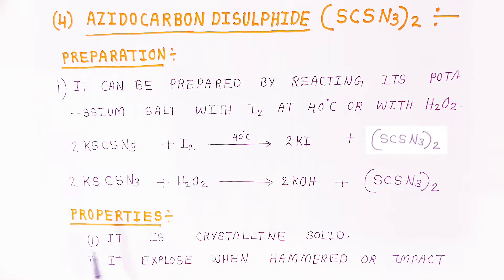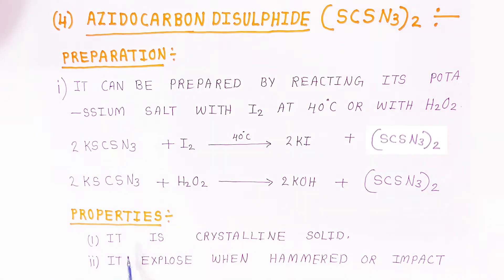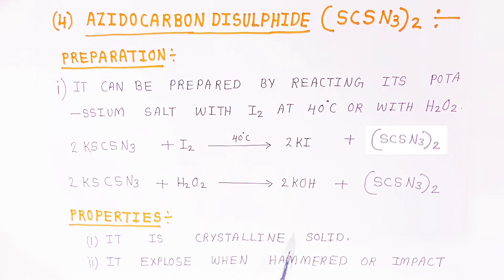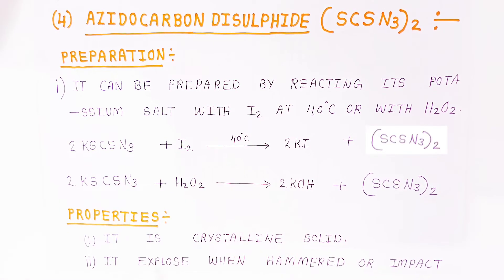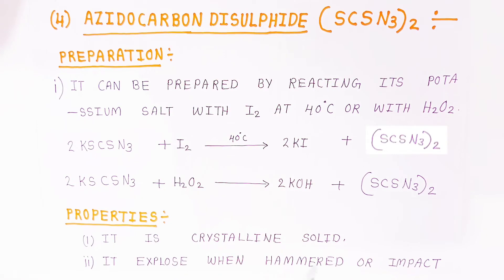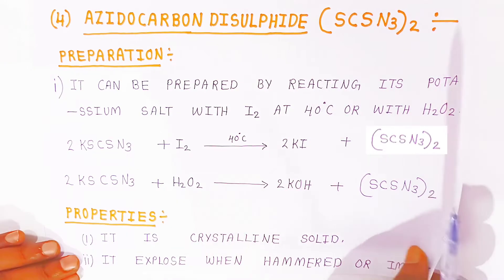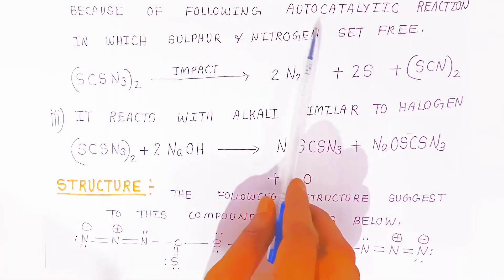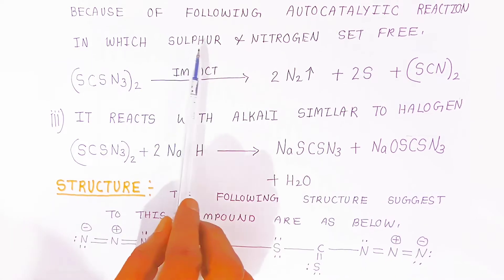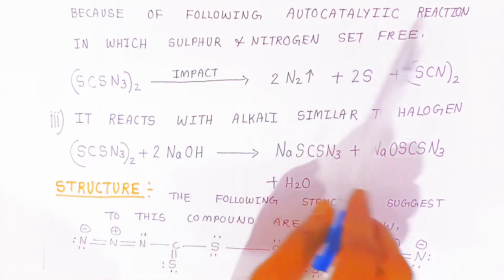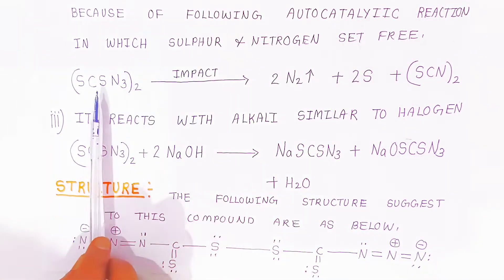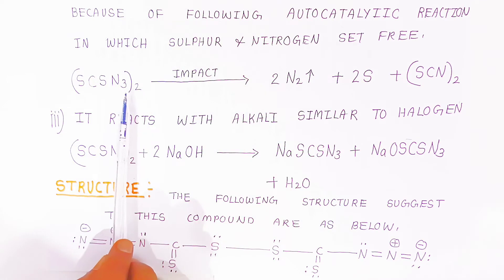Now, what are the properties of azido carbon disulfide? First property: it is a crystalline solid. It explodes when hammered or on impact, because of an autocatalytic reaction in which sulfur and nitrogen are set free. When force is applied to this compound on impact, there is elimination and you get sulfur and nitrogen released.